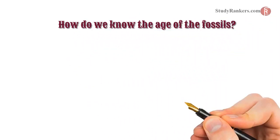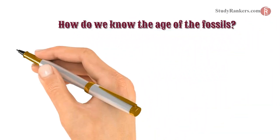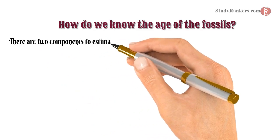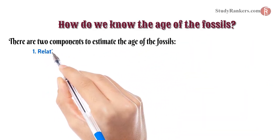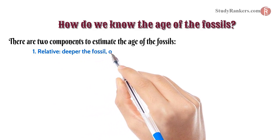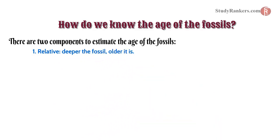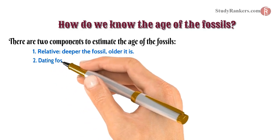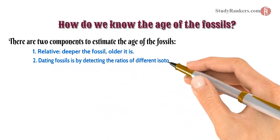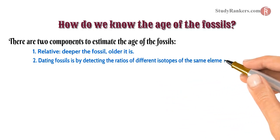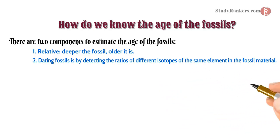A question comes to mind: how do we know the age of fossils? There are two ways to estimate the age of fossils. One is relative dating — deeper the fossil, older it is. The second way is by detecting the ratio of different isotopes of the same element in the fossil material.